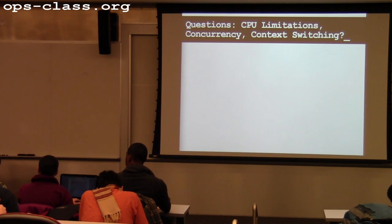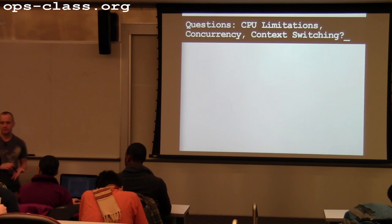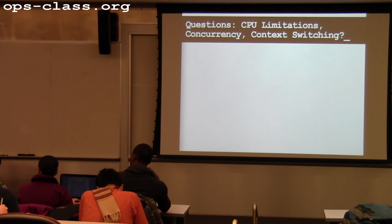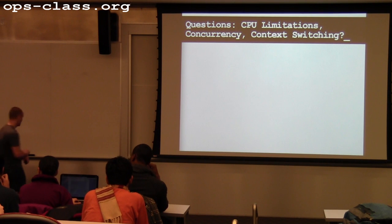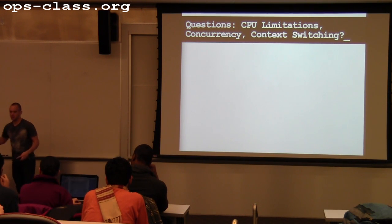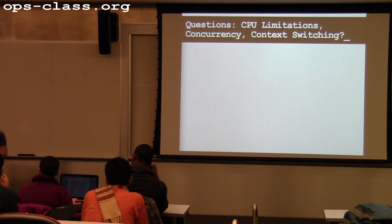Is there a way of measuring the context switching timing between two threads? Absolutely — there's overhead to this, which we're about to talk about. That's a good segue.